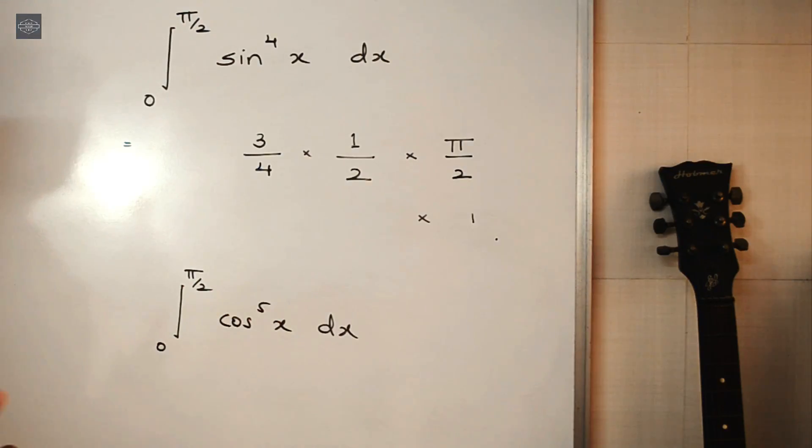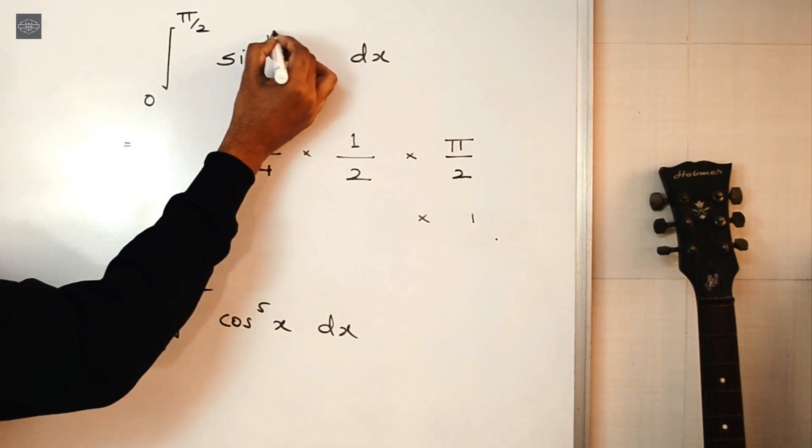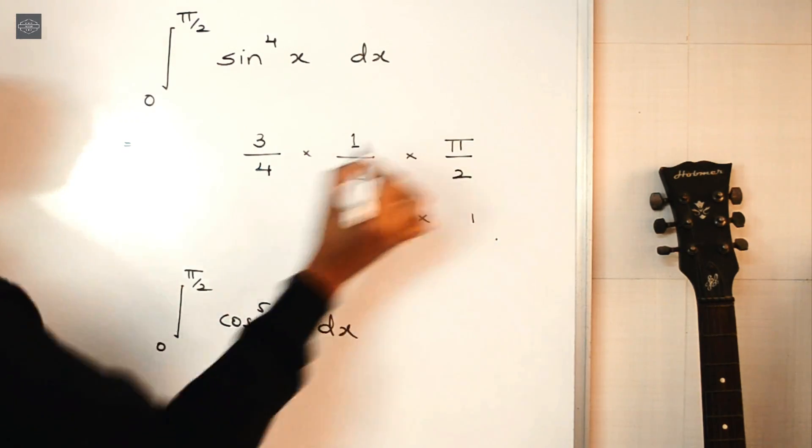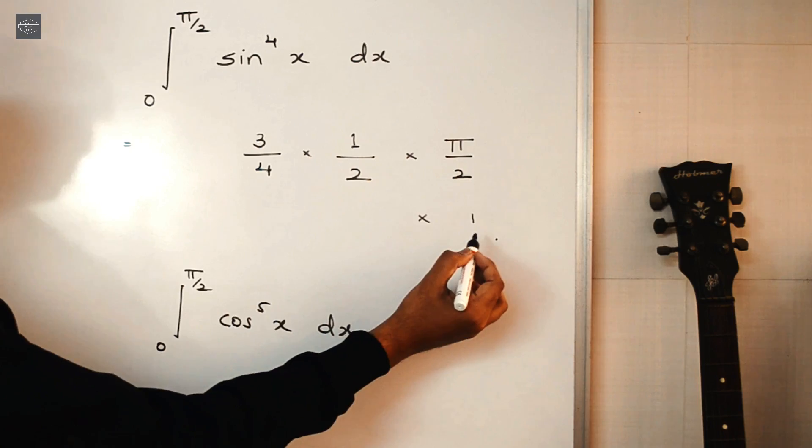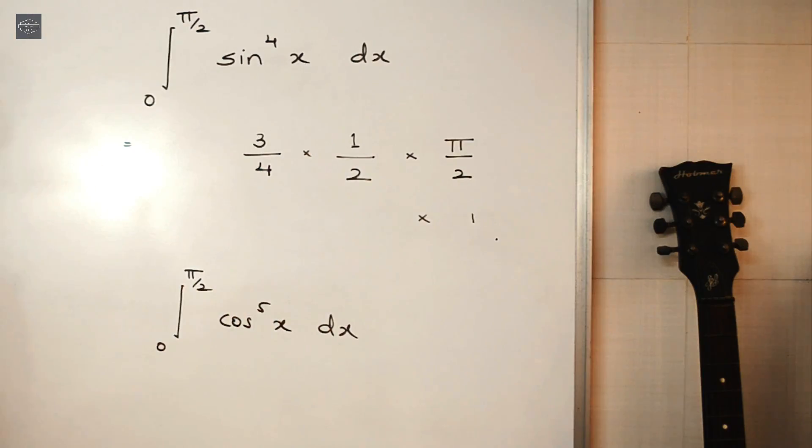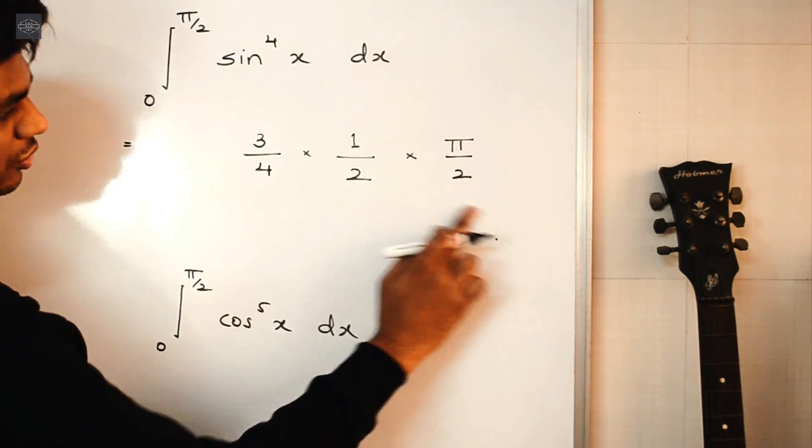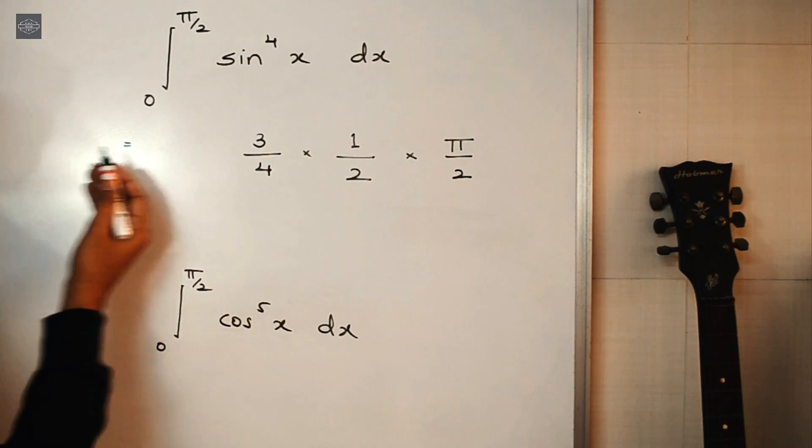So just remember, if this power is an even number, simply multiply at the end by π/2. And if this power is an odd number, simply multiply by 1. So here this power is even, so we erase the 1. And we just need to calculate this now.